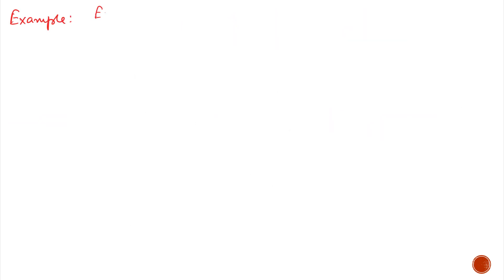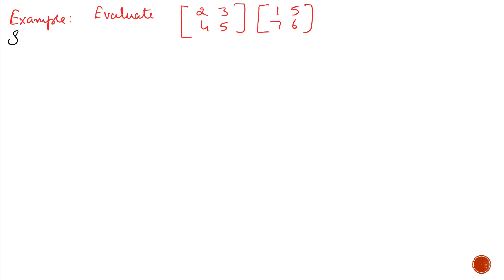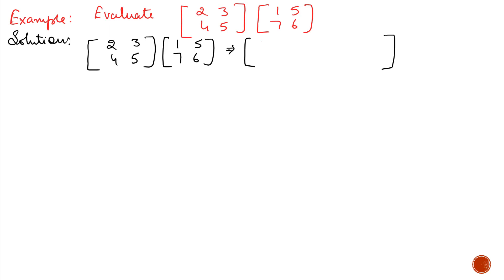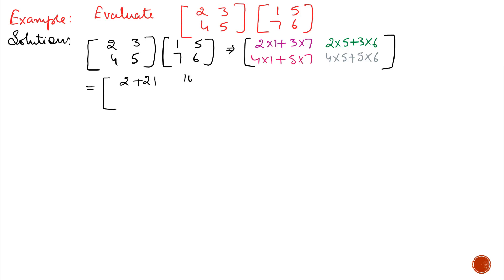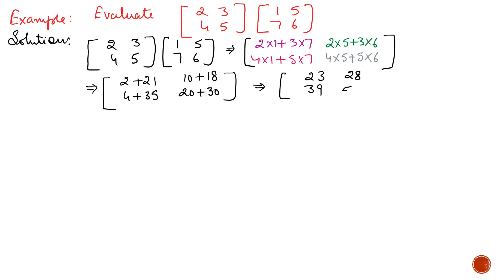Always remember that in order to multiply two matrices, the number of columns of the first must equal the number of rows of the second, and the answer is in the form of rows of first × columns of second. Here we multiply a 2×2 matrix by a 2×2 matrix, so the answer is 2×2 — 4 elements. A11 = first row of first matrix × first column of second. A12 = first row of first × second column of second. A21 = second row of first × first column of second. After calculation the answer is [23, 28; 39, 50].